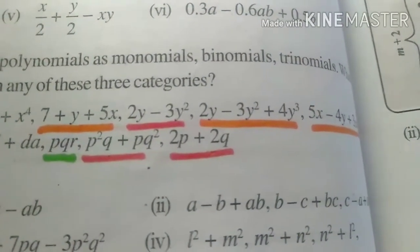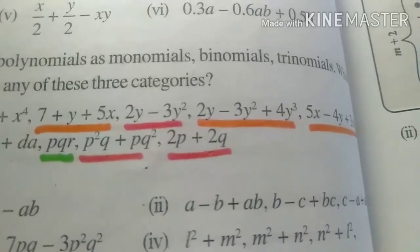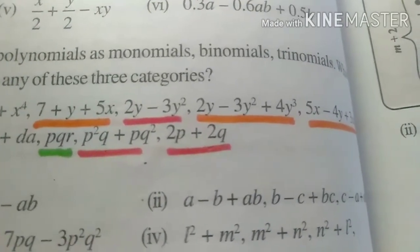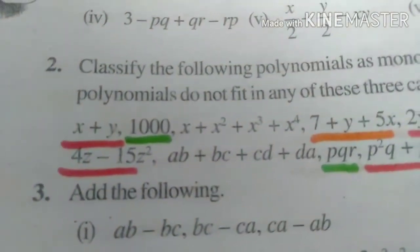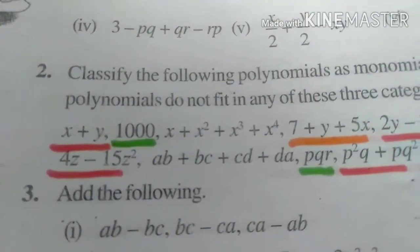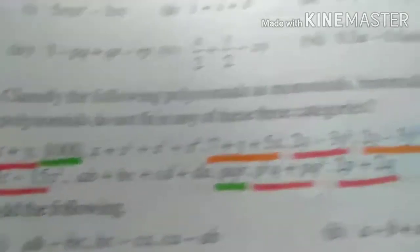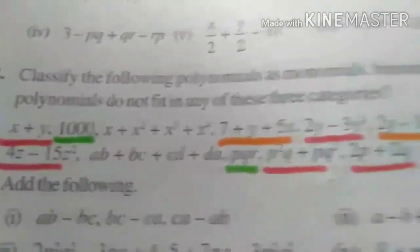then this 2Y minus 3Y square, this P square Q plus PQ square, this 2P plus 2Q, these are the binomials. This term is also binomial, 4Z minus 15Z square and with the orange color, the terms,